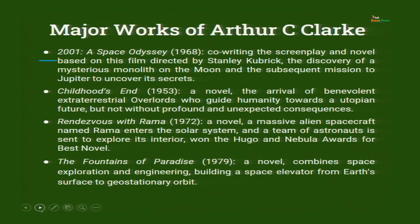Among Clarke's major works: 2001: A Space Odyssey (1968) centers on the discovery of a mysterious monolith on the Moon and a subsequent mission to Jupiter to uncover its secrets. The monolith is a stone structure that has been watching and recording the history of the human race for millions of years, able to travel through time and space and alter the time and space of anyone who touches it.